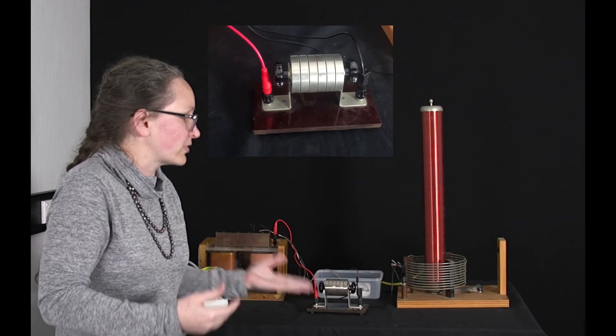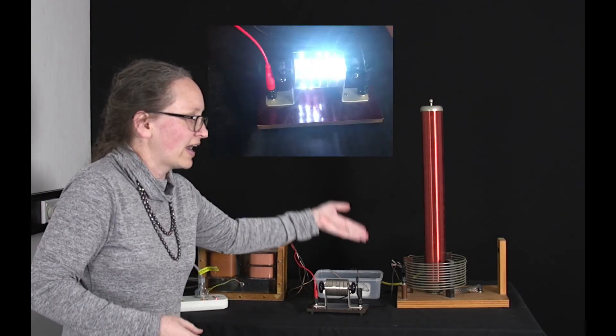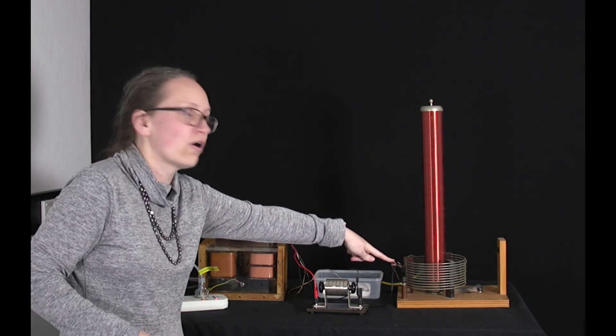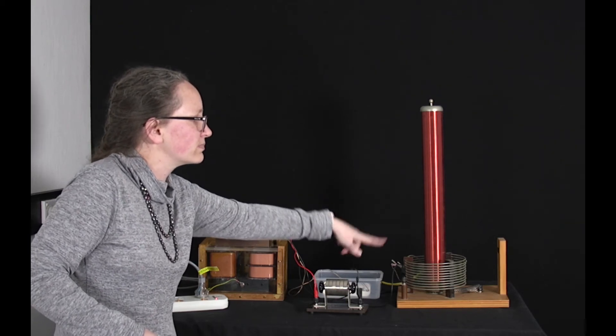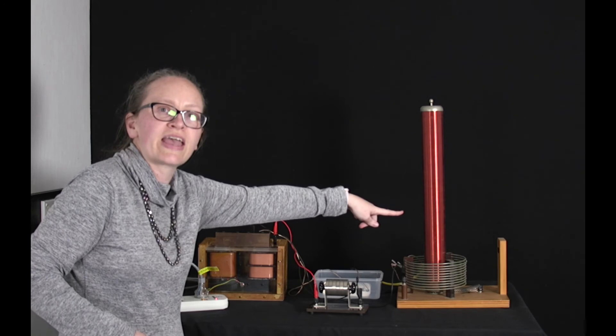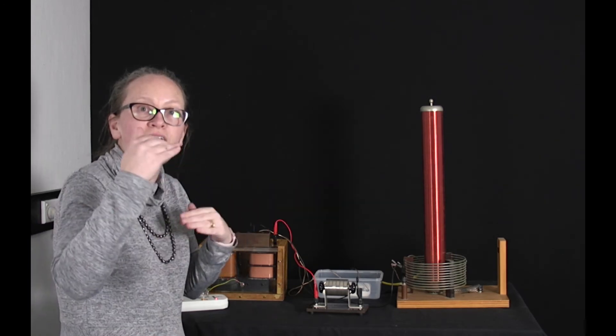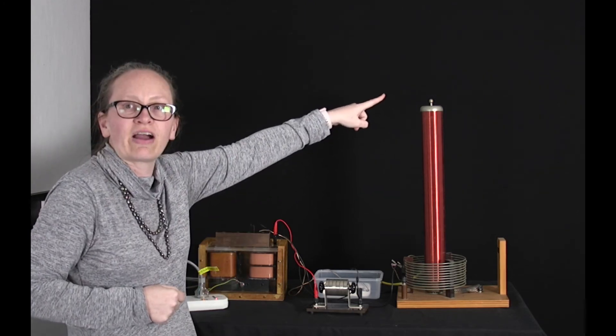When the spark jumps across the spark gap it sends a very high current very quickly into the primary coil of the transformer here. So the current flowing through the primary coil then induces a current in the secondary coil which produces a really high voltage which then ionizes the air up here.